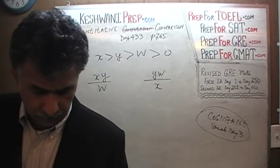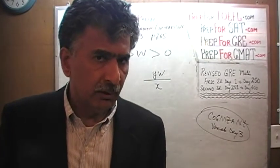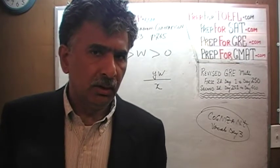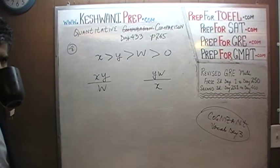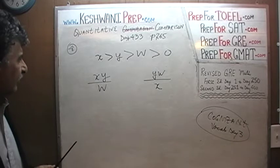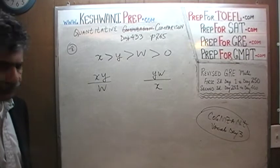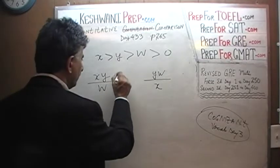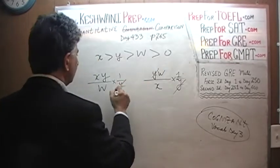Go ahead and do it yourself — no matter how simple the problem is, there is a reason to pause and try before seeing the solution. Once you see the solution it's too late. Here we go: we have xy/w in column A and yw/x in column B. We see a y in both — divide both sides by y, and y drops out.